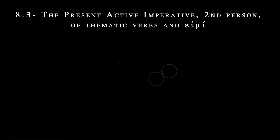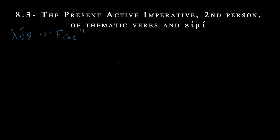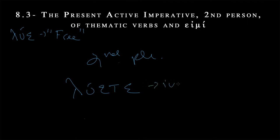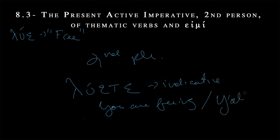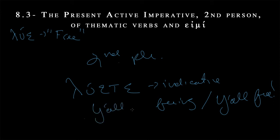So that's lue with an e. Now let's talk about the second person plural — luete. This is going to look awfully familiar, in part because it is. This looks exactly like the indicative second person plural. So this can mean 'you are freeing,' or the same form — although it's a separate mood — can mean 'y'all free.' It's a little bit frustrating, maybe, that the imperative looks so much like the indicative in the plural.